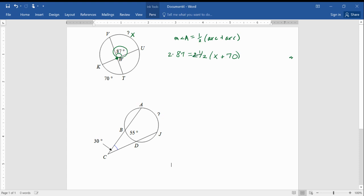So, 2 times a one-half is actually 1. So, that's gone. So, 2 times 87, that's 174. Now, that's just equal to X plus 70.